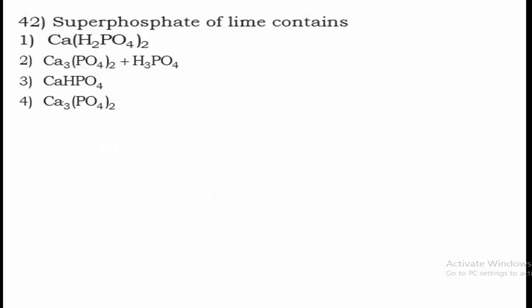Question 42: Superphosphate of lime contains what? Superphosphate of lime is Ca(H2PO4)2, and option 1 is the right answer.